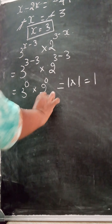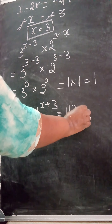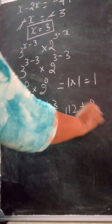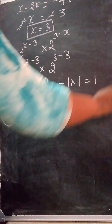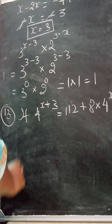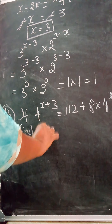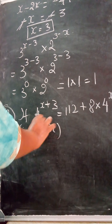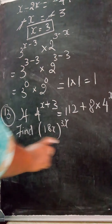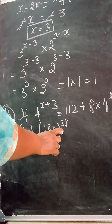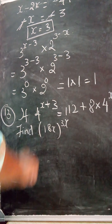Next problem: if 4^(x+3) = 112 + 8·4^x, find 18x^(3x). Same method — we will find the value of x and then substitute in the given expression.